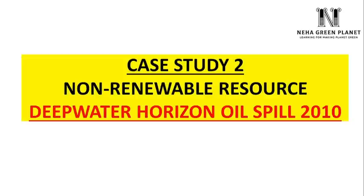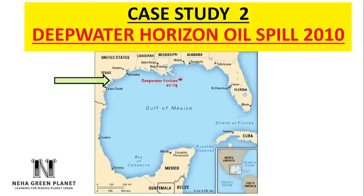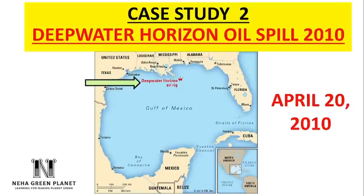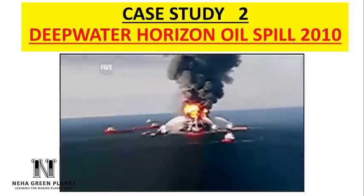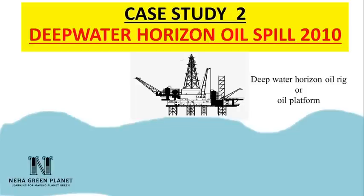Despite lessons from Exxon Valdez, America faced another major environmental disaster in 2010 — the Deepwater Horizon oil spill, considered the worst marine oil spill of all time, also known as the Gulf of Mexico oil spill. It occurred on April 20, 2010, 41 miles from the American coastline, triggered by a massive explosion on the Deepwater Horizon oil rig — a structure with facilities to extract and process petroleum and natural gas from beneath the seabed.